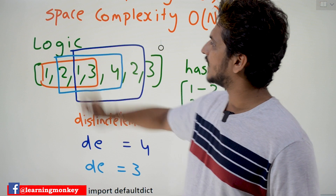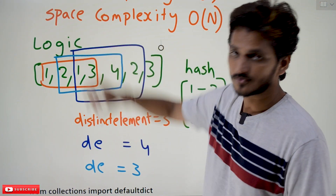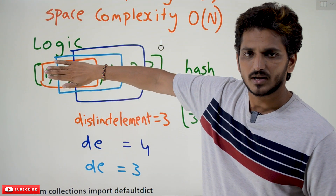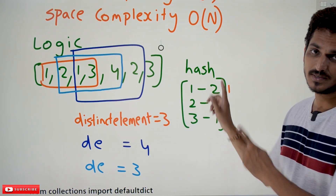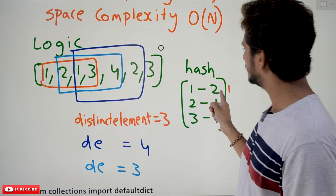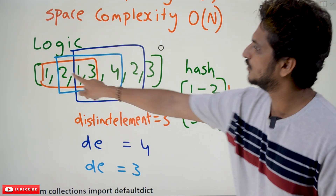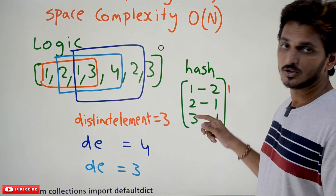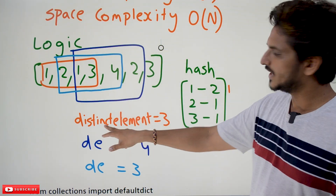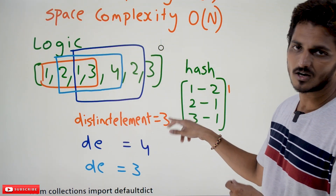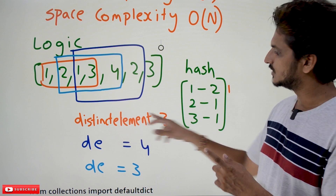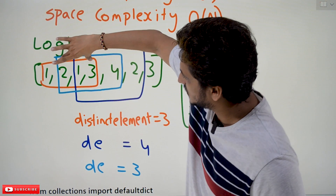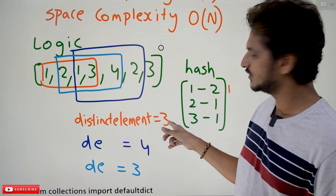Coming to the logic part, this orange box is our first window. What we have to do in the first window is read the elements one by one and create a hash table — key value pairs. 1 exists 2 times, 2 exists 1 time, 3 exists 1 time. While creating this hash table, maintain a variable 'distinct elements' and increment the count for distinct elements. So the distinct elements count is 3.